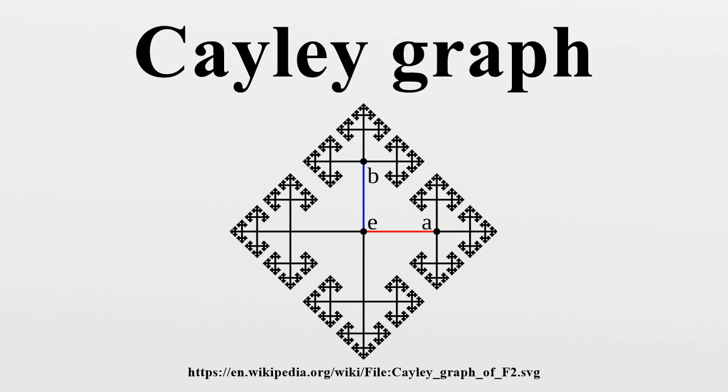A Cayley graph of the dihedral group D4 on two generators A and B is depicted to the left. Red arrows represent left multiplication by element A. Since element B is self-inverse, the blue lines which represent left multiplication by element B are undirected. Therefore the graph is mixed.